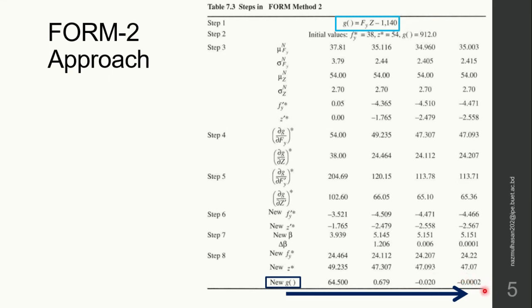Where the resistance is equal to the load, and this is the critical point. Now from the final iteration we can have the corresponding value of the random variables.